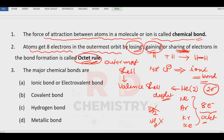Now, what are the types of chemical bonds we are going to study? First, ionic bond — also called the electrovalent bond. Then we have covalent bond, hydrogen bond, and metallic bond. All of these we are going to study in detail in future videos.